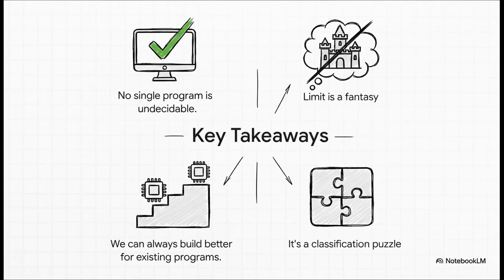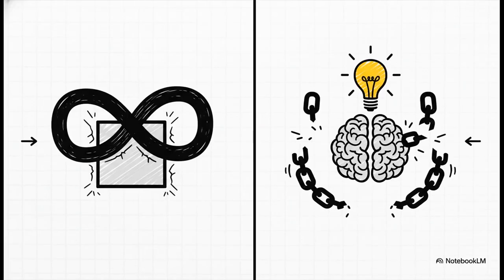So, what are the big takeaways here? First, the halting problem proof does not, and has never, proven that any single specific program is impossible to figure out. Second, its famous limit only applies in a mathematical fantasy land of unending programs. Third, in our world, we can always just build better deciders as new programs get made. And finally, this means it's not a fundamental barrier to AI. It's more like a classification puzzle. When you strip away all the mystery, this is what the halting problem proof really shows. You can't fit an unending amount of information into a finite box. You can't write a finite program that knows everything about an unending number of things. The thing is, that's kind of obvious. It's trivial. The idea that this means knowledge itself is somehow limited? Well, that's just false.